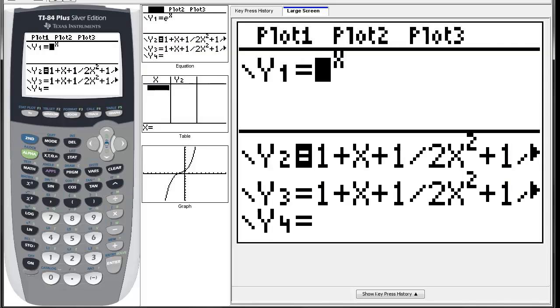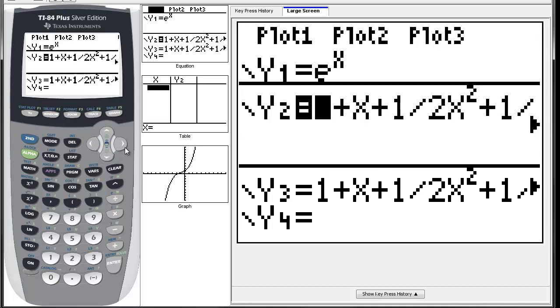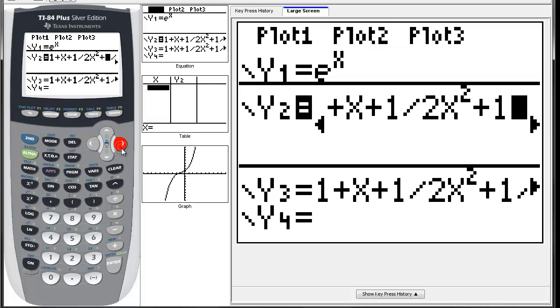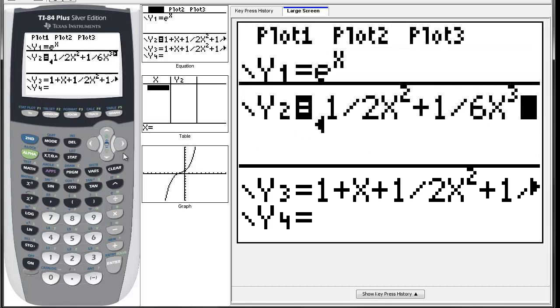The idea is adding more and more terms to get a better approximation. To reinforce this, let's go to the calculator. You can see what I've done here. I've entered e^x and this line right here, which is going to be my third Maclaurin polynomial.